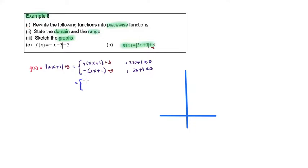Simplify the upper part. This gives us 2x plus 4. Solving 2x plus 1 greater or equal to 0 gives us x greater or equal to negative half. Negative times 2x plus 1 is negative 2x minus 1 plus 3, which gives us negative 2x plus 2.